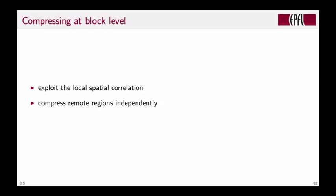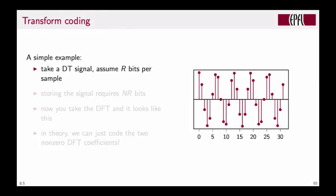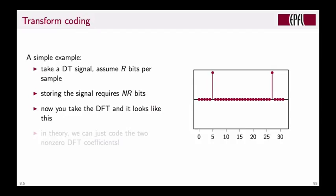The block scheme we saw is very simple and naive, just taking the average value. Can we do better? We need to introduce a second ingredient: transform coding. To see how it works, assume you have a simple one-dimensional discrete-time signal encoded at r bits per sample. Storing the signal as is requires n times r bits. But suppose you take the DFT, and it looks like this.